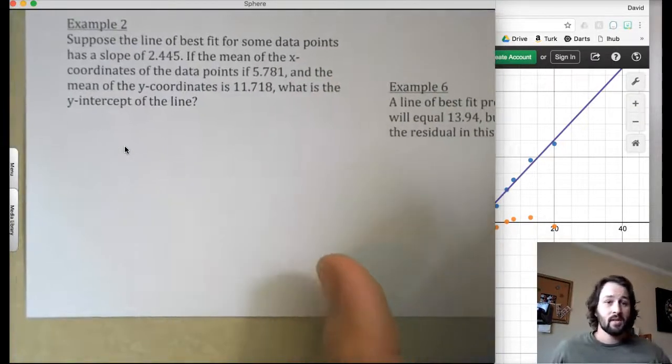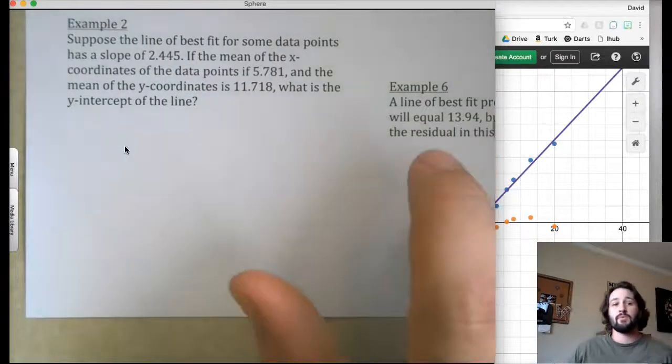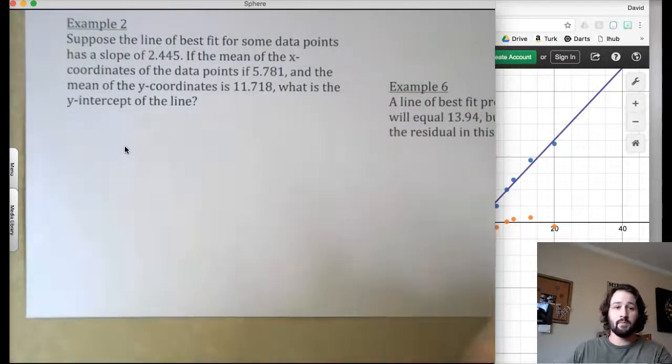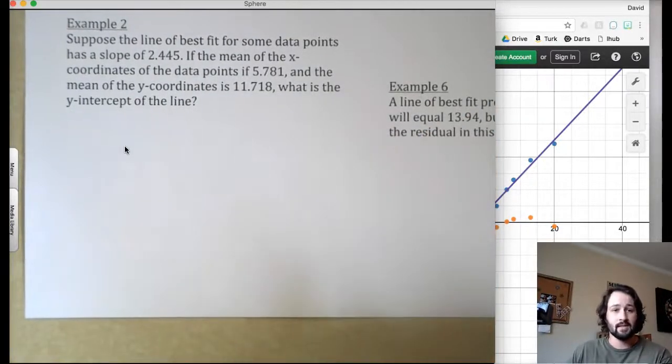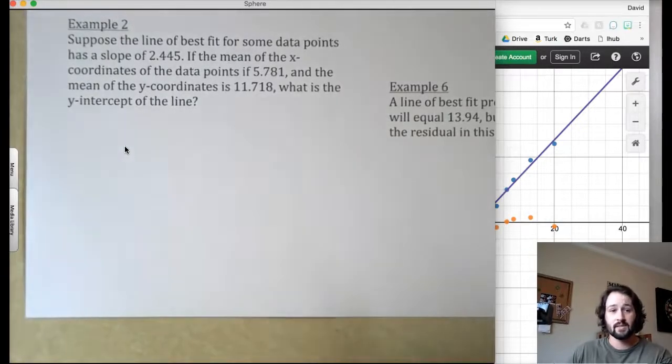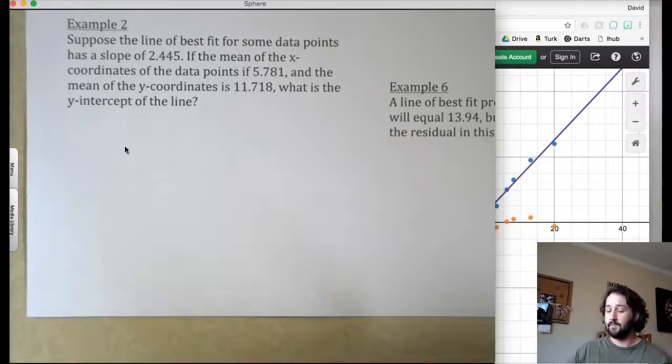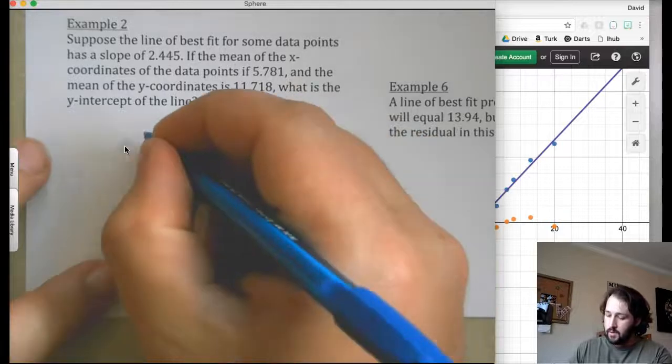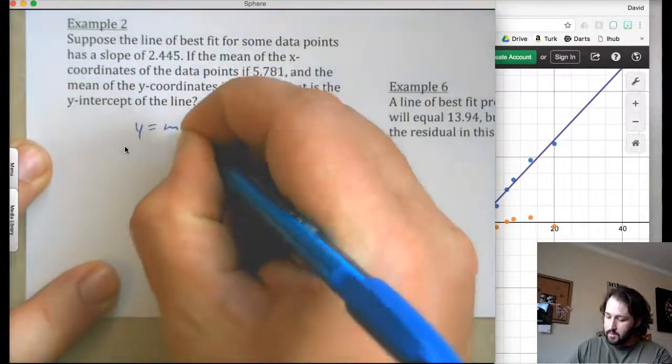Alright, moving on to the next one. Suppose the line of estimate for some data points has a slope of 2.445. If the mean of the x-coordinates is this, and the mean of the y-coordinates is this, what is the y-intercept of the line? So, remember, y equals mx plus b.